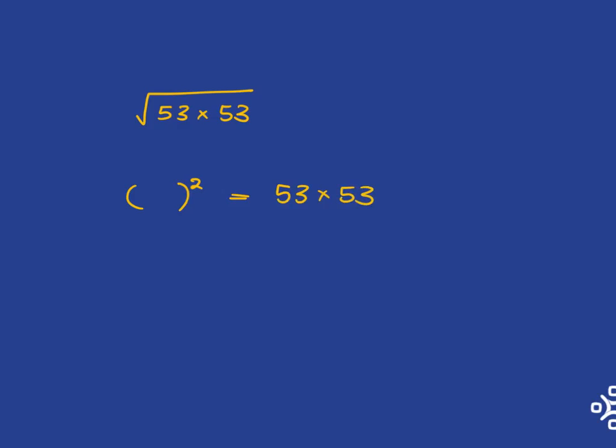Well, what number must I put in over here to get 53 times 53 as the answer? The number I have to put in there is 53. Because 53 squared means 53 times 53. So the square root of 53 times 53 is 53.